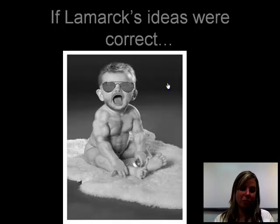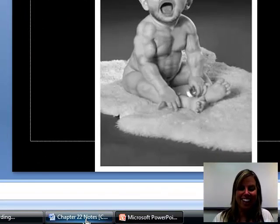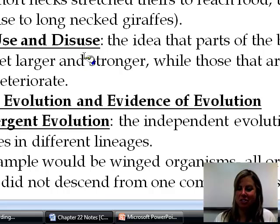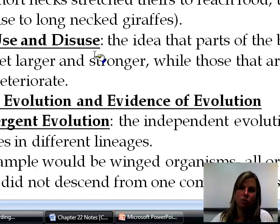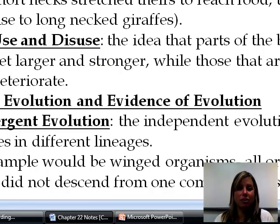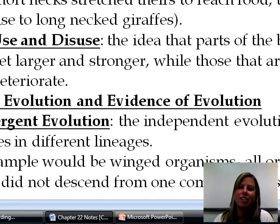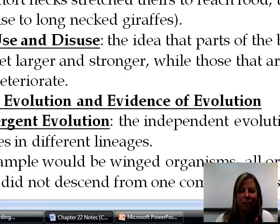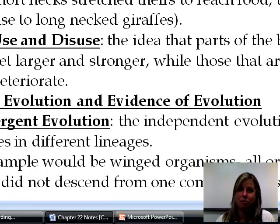Lamarck also proposed the use-and-disuse idea: things you use all the time get stronger and are passed on more than things you don't use — basically 'use it or lose it.' But once again, that has nothing to do with what's in your DNA, so it was rejected. Lamarck was quite popular for a long time, but once Darwin started providing evidence for his theories, people began to doubt Lamarck. In the next part, we'll talk about types of evolution and additional evidence we have for evolution.